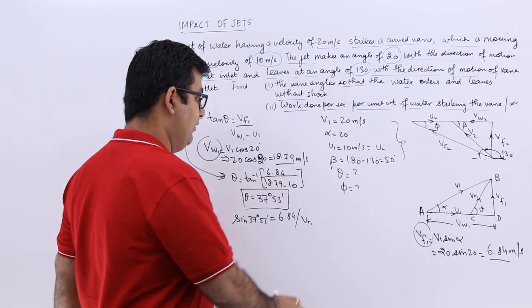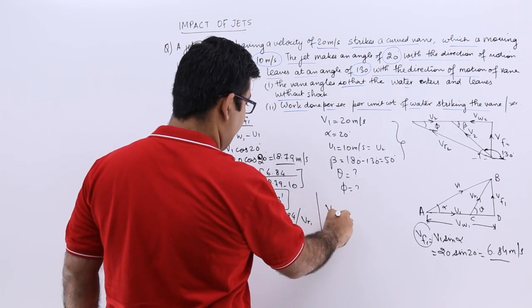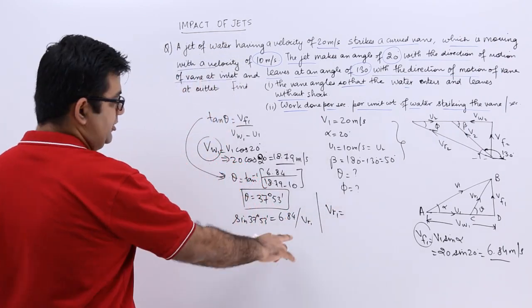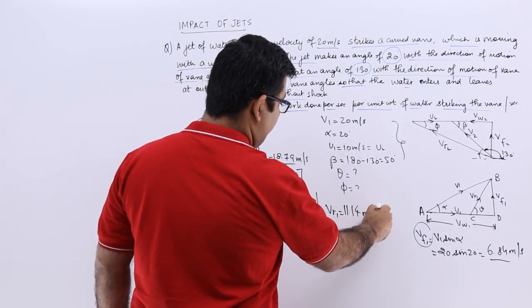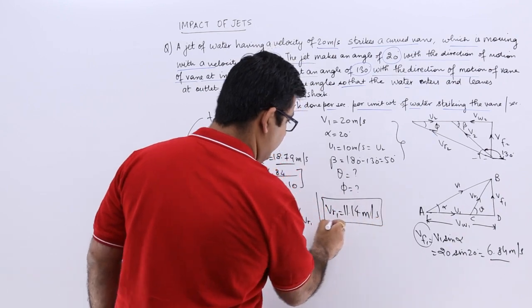From this equation I will get the value of VR1 which is 6.84 by this sine. It will be 11.14 meters per second.